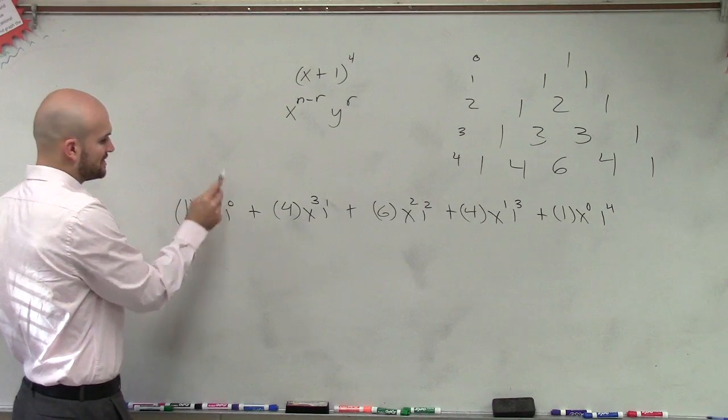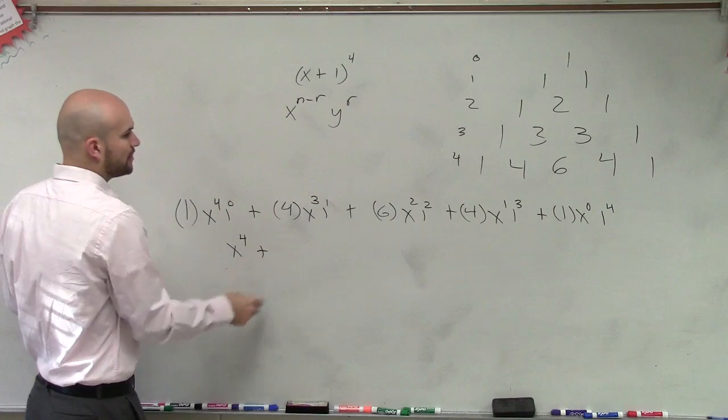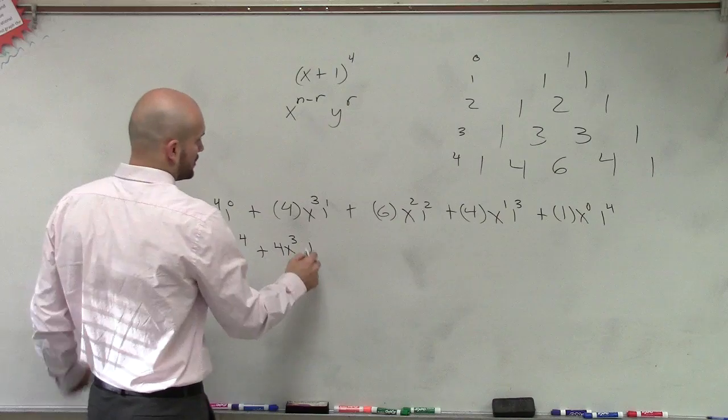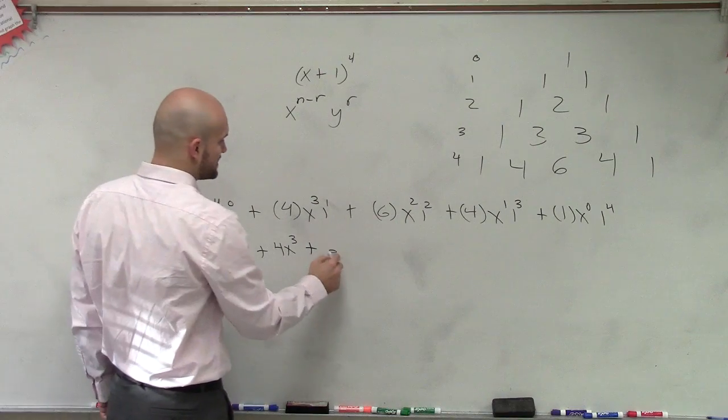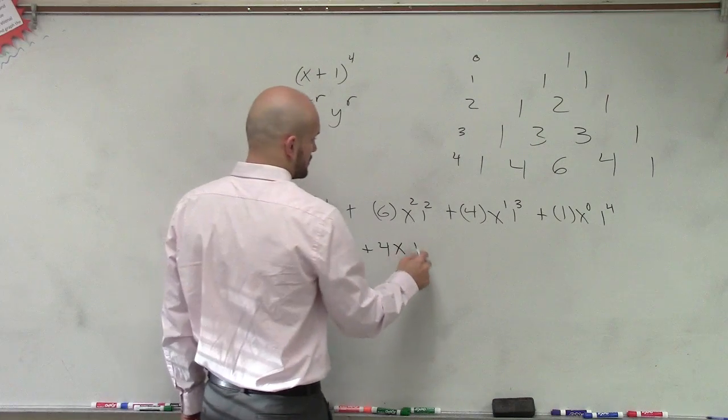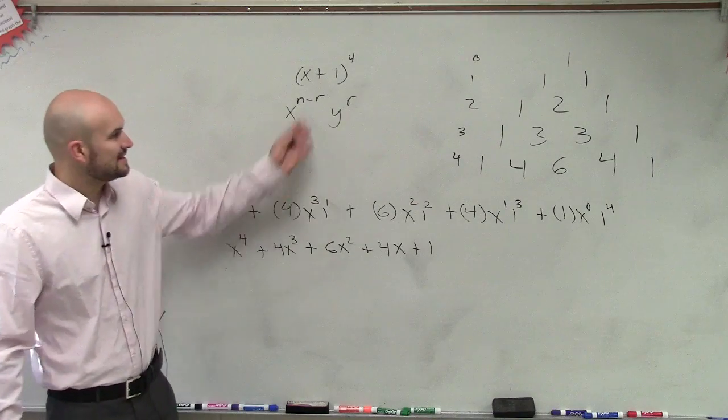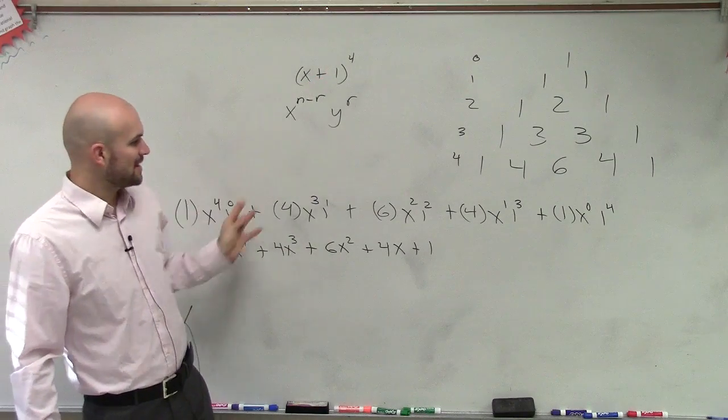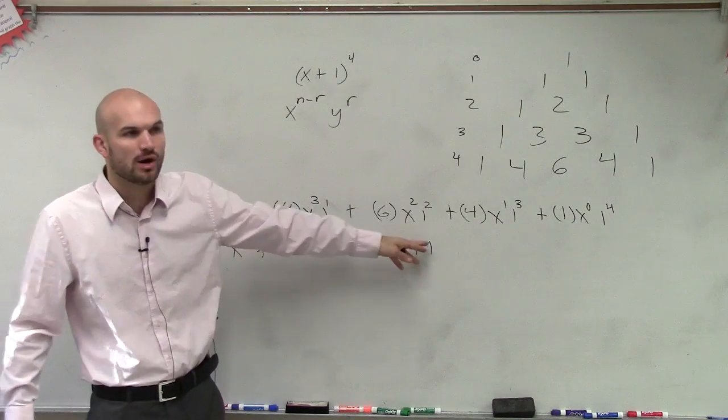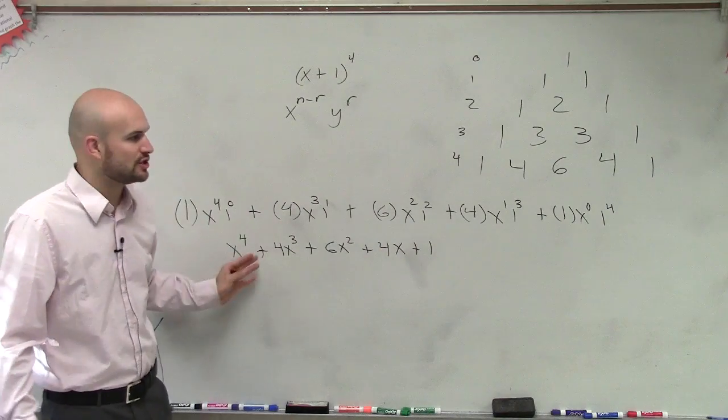Well, obviously, we know 1 to the 0 times 1, that's just going to be x to the fourth. Plus here, we're just going to have 4x cubed. Plus here, we're going to have 6x squared plus 4x plus 1. So in this example, you guys can see that my second term, it doesn't matter what power I raise it to, 1 raised to the 0 all the way up to the fourth is always going to equal 1. So it's never really going to change our problem.